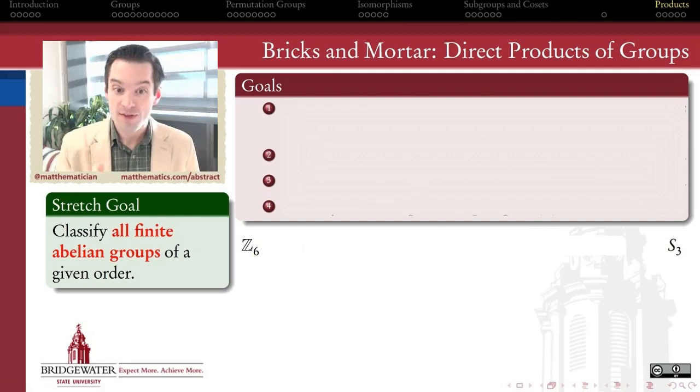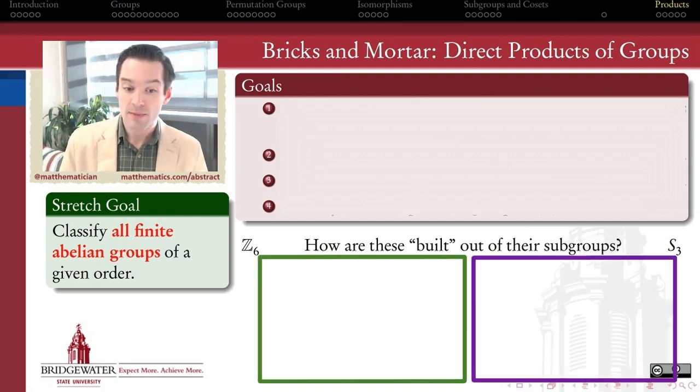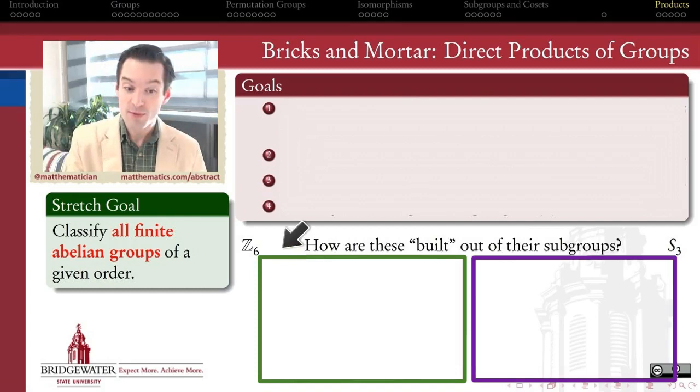In this set of videos what I want to do is start by asking the question: what is it really that makes the group Z6, which is cyclic, and the group S3, the symmetry group on three symbols, what is it that makes those two groups different? In particular, how are each of these two groups built out of their subgroups?